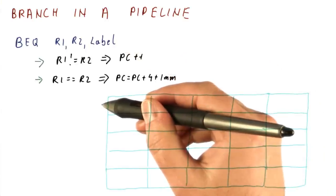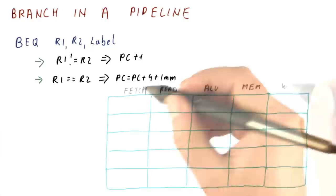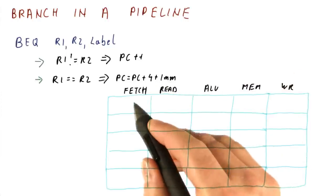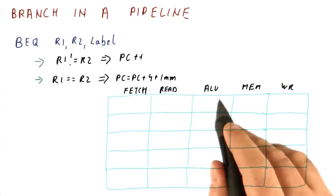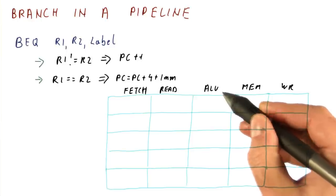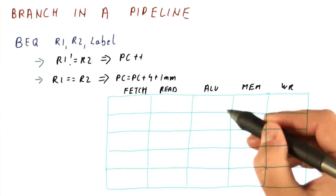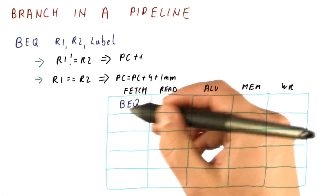Now let's look at what happens when a branch goes through a pipeline. Let's say we have our classical pipeline with a fetch, read, ALU, memory, and write stages. And let's say that towards the end of the ALU stage, we actually figure out if a branch is taken or not. In the first cycle, we fetch this branch.